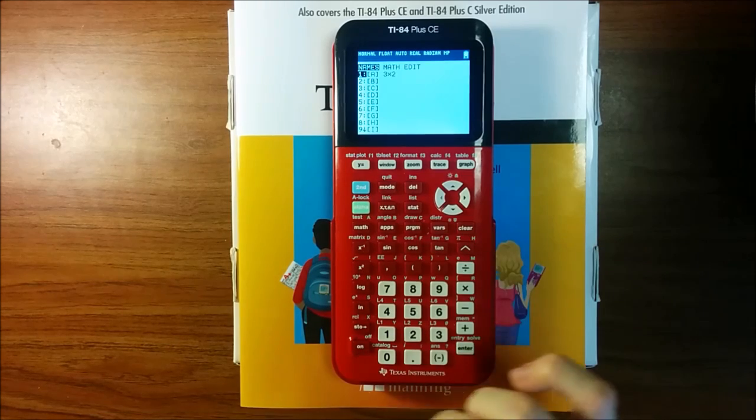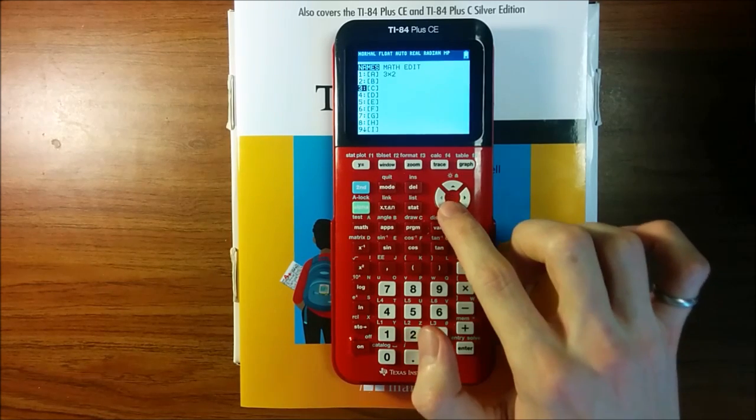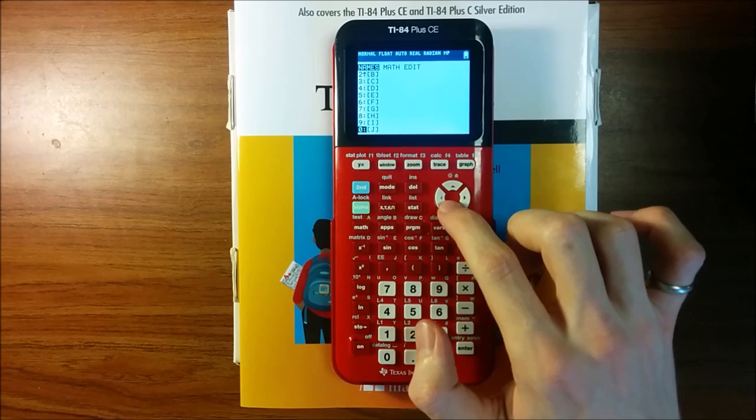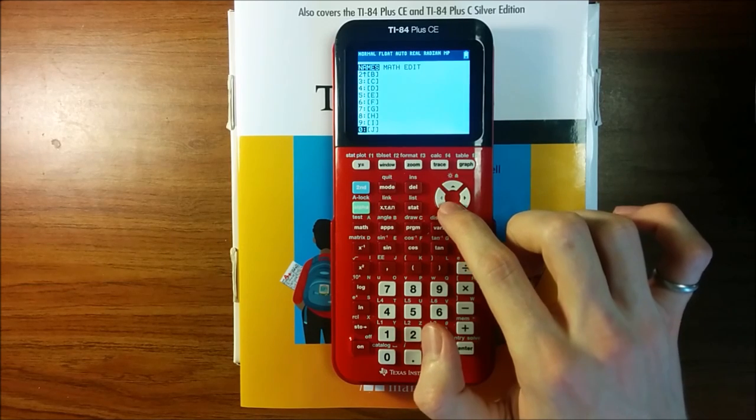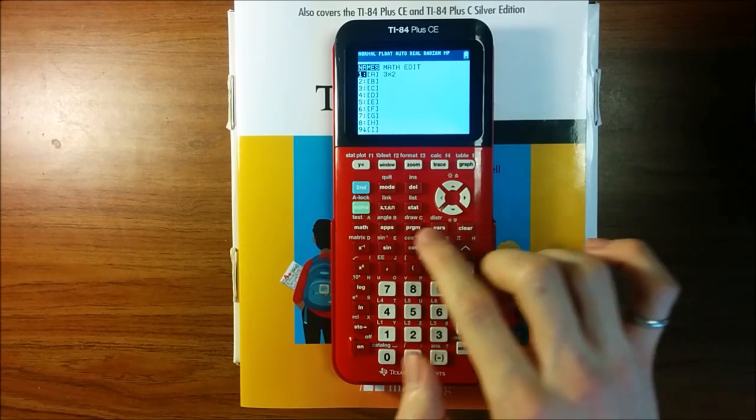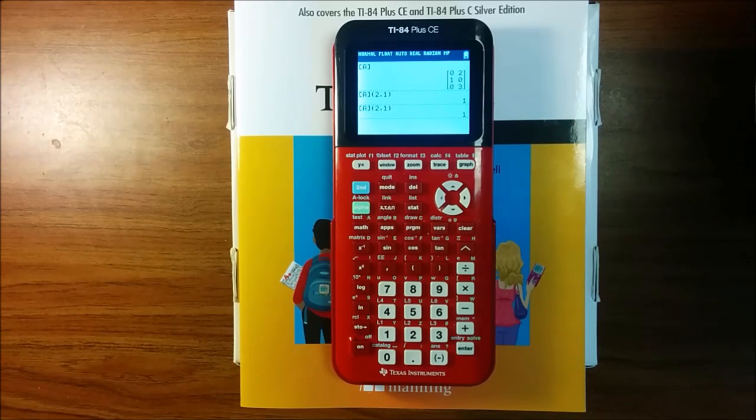Unfortunately, unlike lists, you can't define matrices with your own names. If you look through the names tab on the matrix menu, you'll see that there are only 10 matrices, A through J, and those are the only matrices that are available. Also, new on the TI-84 plus CE, you can only have up to 400 elements in a matrix, so you could have a 40 by 10 matrix, but you couldn't have a 40 by 11 matrix.